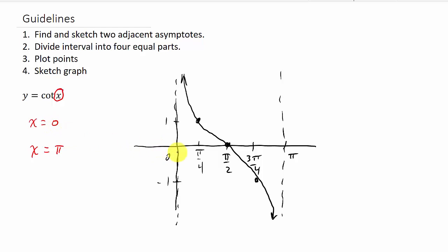Once you have your two adjacent asymptotes — in this case 0 to pi — we split that interval into four equal regions. We took 0 and pi, found the midpoint which is pi over 2. Then we took 0 and pi over 2 and found the midpoint: pi over 4. And we took pi over 2 and pi and found the midpoint: 3 pi over 4. Then we plot our points. With cotangent, the first value starts at 1, then goes to 0, then to negative 1 — every time, no matter what the numbers are.